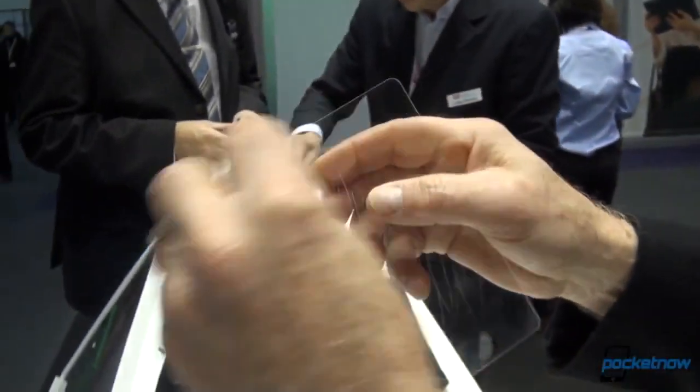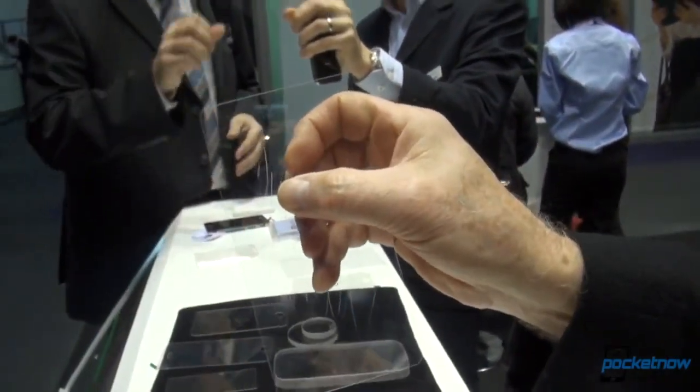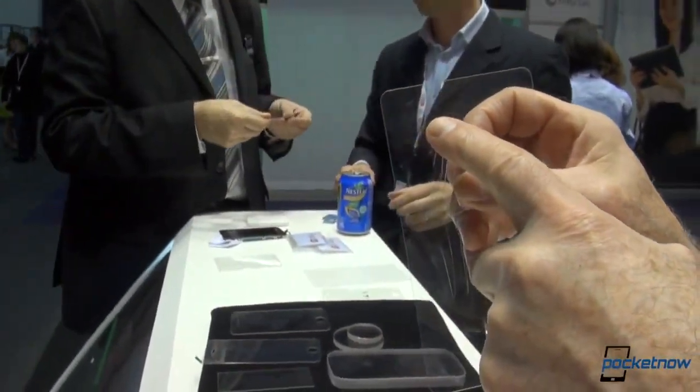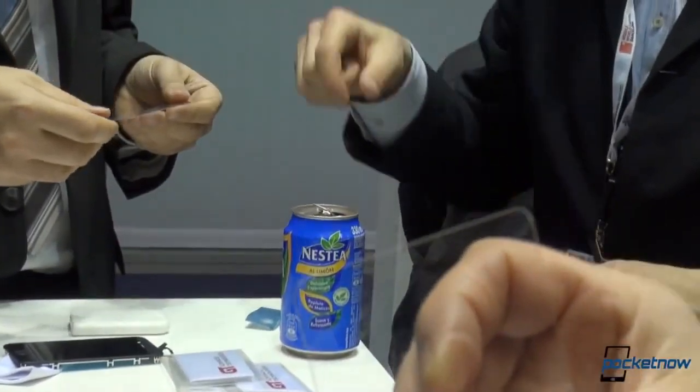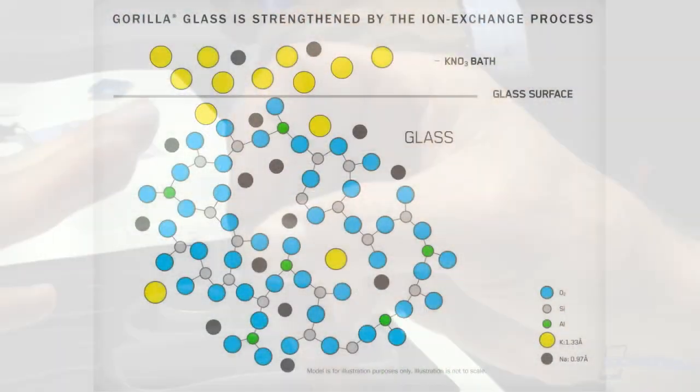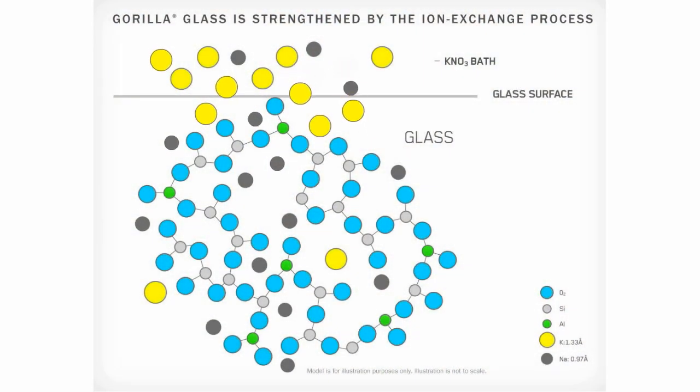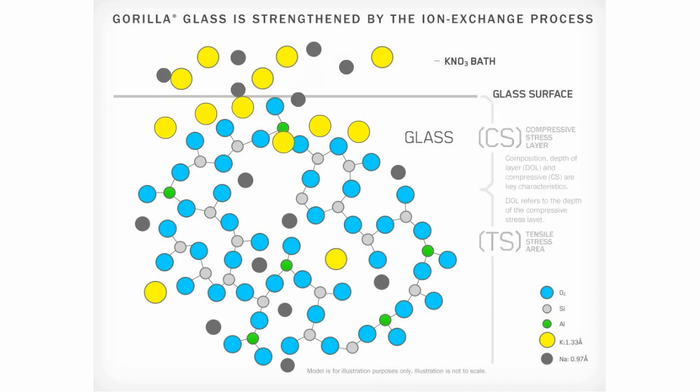The hardness of a substance is depending on the arrangement of its atoms, ions, or molecules. For Gorilla Glass, the tight potassium layer is only in the surface of the screen. The molecules inside the screen are very messy.